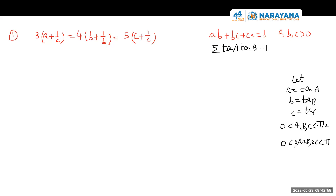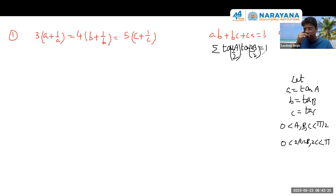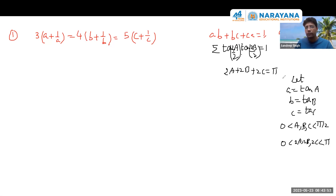Now what you can observe is that 2A + 2B + 2C — you know in a triangle the identity: summation tan(A/2)·tan(B/2) equals 1. So you should think of A as 2·(A/2), and B as 2·(B/2). Then tan(2·(A/2))·tan(2·(B/2)) equals 1, and from here I can claim that 2A + 2B + 2C equals π.